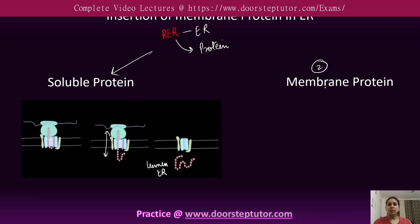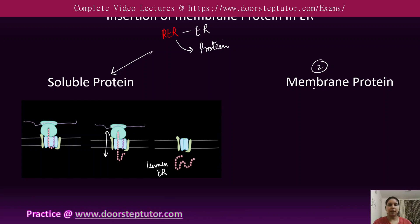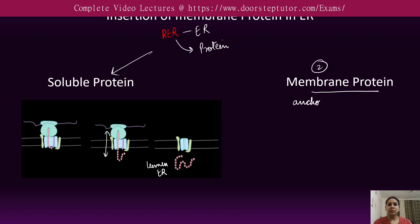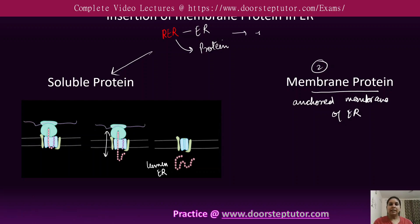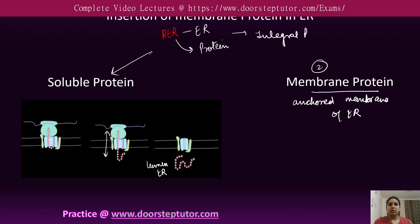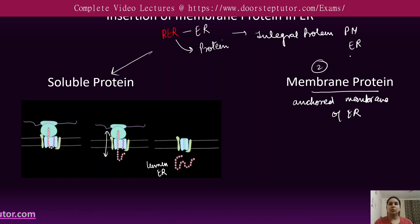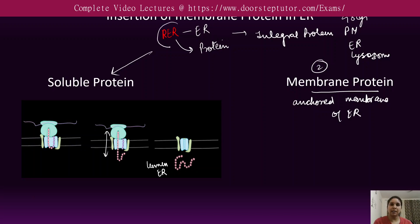The second type of protein synthesized by the RER in the ribosome is the membrane protein, which gets anchored inside the membrane of the endoplasmic reticulum. All integral membrane proteins — whether of the plasma membrane, endoplasmic reticulum, lysosome, or Golgi apparatus — are synthesized in the RER only.